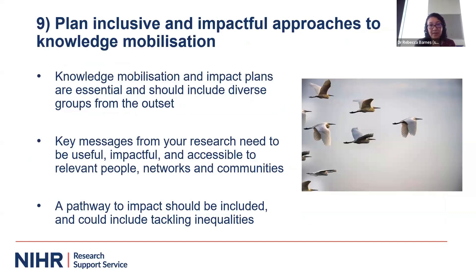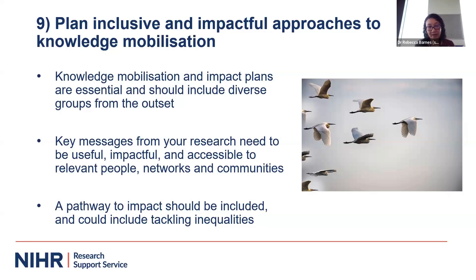Step nine: plan inclusive and impactful approaches to knowledge mobilization — the process by which research impact is realized. Researchers can't do this in isolation; they need diverse stakeholders who will be the beneficiaries and users of the research throughout the whole research cycle. It's key that those stakeholders are diverse so we can understand what knowledge different groups need, what messages will be relevant to them, and how to communicate those messages to increase uptake. The pathway to impact should include tackling inequalities and measuring and demonstrating that.